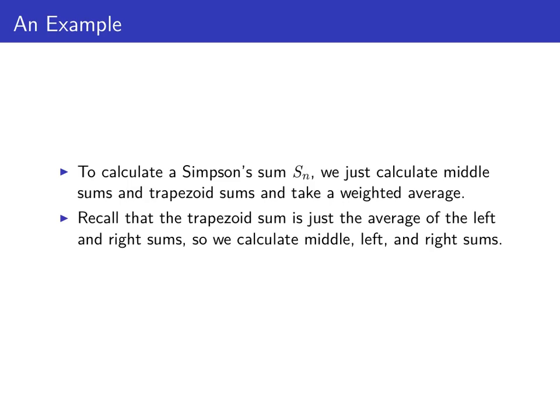Remember the trapezoid sum is just the average of the left and the right sums. So if we calculate the middle sum, the left sum, and the right sums, then we can get the trapezoid sum and then the Simpson's sum.